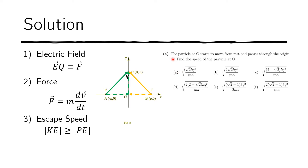This fourth problem is more difficult because it wants us to find the speed of the particle at the origin. The particle starts to move downwards and passes through the origin. This is difficult because the force depends on the electric field, and the electric field depends on position. If you're at one point you have a different electric field than at another. So the force depends on position, which means your acceleration is also dependent on position.